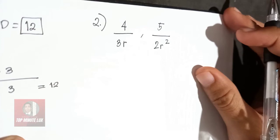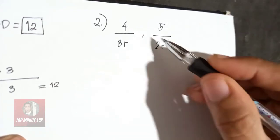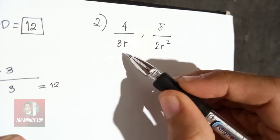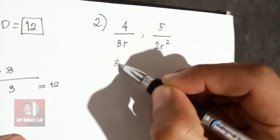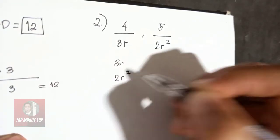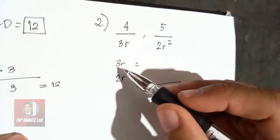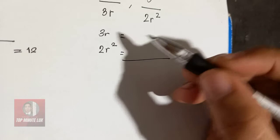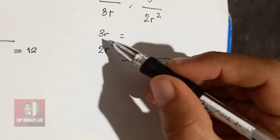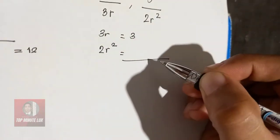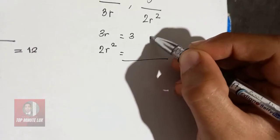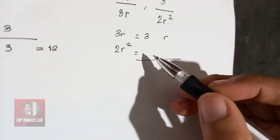To fully understand the process of finding the LCD, let us do the second example. So the denominators are 3R and 2R squared. Now for 3R, let's break down. As you can observe, 3 is already a prime number. So 3, then break down with R.